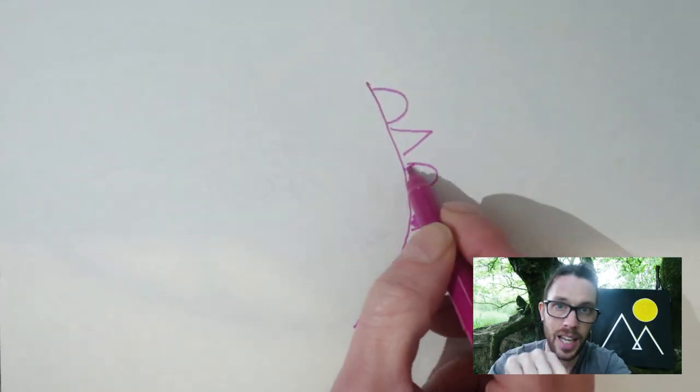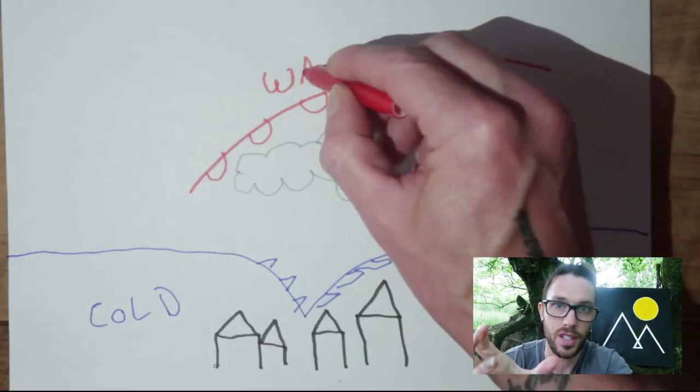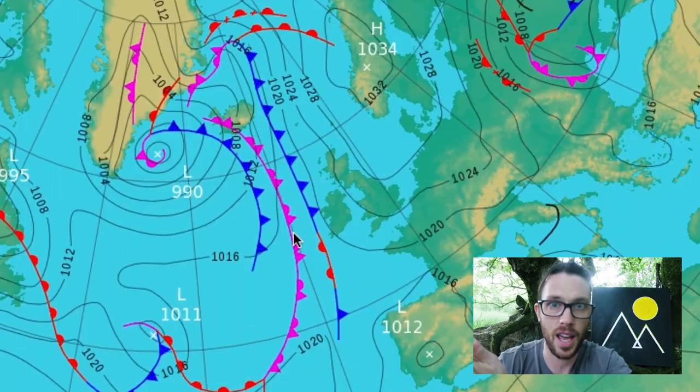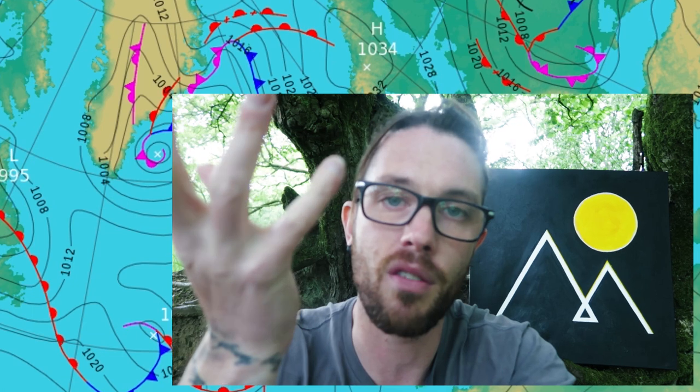Whenever you see an occluded front on the map, it's like a pink line with a spike and a half circle alternating. An occluded front is where the two cold fronts have joined together. The rear cold front has pushed through, pushed the warm air up into the air, and trapped it up there by meeting the cold front that was ahead — so now you've got that warm moist air above you. Whenever you see an occluded front, you can pretty much guarantee you're going to be getting wet and you need your waterproofs.